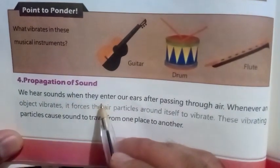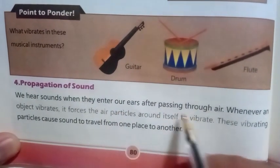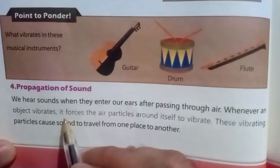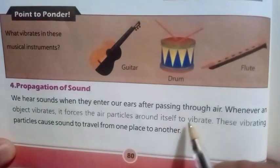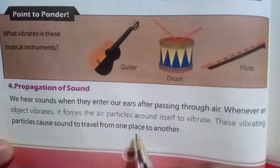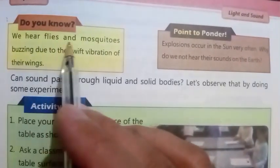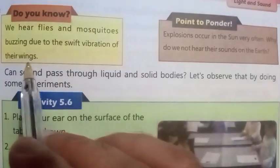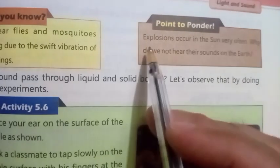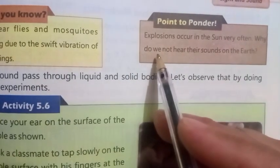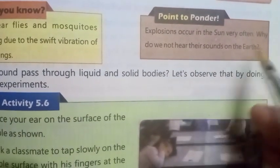We hear sounds when they enter our ears after passing through air. Whenever an object vibrates, it forces the air particles around itself to vibrate. These vibrating particles cause sound to travel from one place to another. Do you know we hear flies and mosquitoes buzzing due to the swift vibration of their wings? Point to ponder: Explosions occur in the sun very often. Why do we not hear their sounds on the earth?